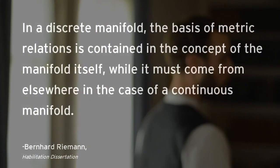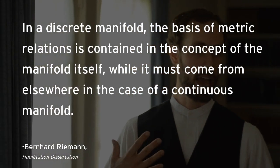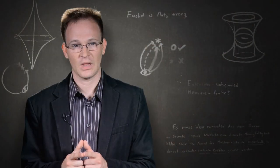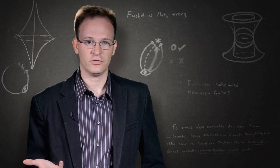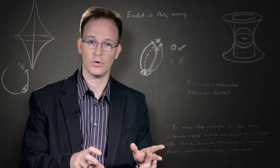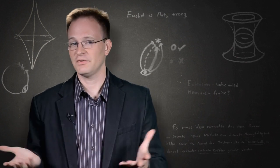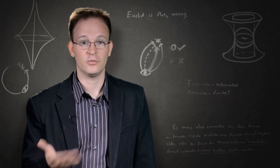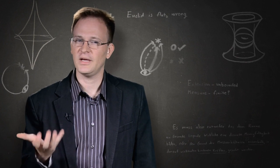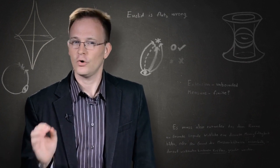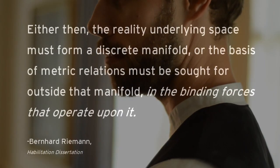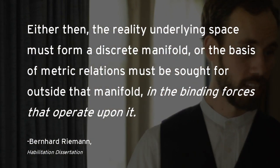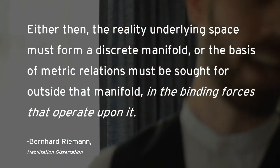In a discrete manifold, the basis of metric relations is contained in the concept of the manifold itself, while it must come from elsewhere in the case of a continuous manifold. To clarify that, whenever you name or conceptualize a discrete manifold, such as the keys on a keyboard or the people in a room, you've already given the means of measurement with the conception of the manifold. But, in a continuous manifold, such as length or position, you're given no idea of what the space is like or how measurements ought to be made. Riemann continues, either then, the reality underlying space must form a discrete manifold, or the basis of metric relations must be sought for outside it, in the binding forces that operate upon it.